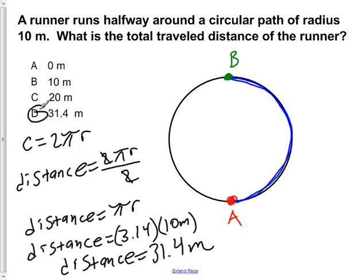So our answer would be D. 31.4 meters will be the total travel distance of the runner, while its displacement, as in the previous problem, was 20 meters.